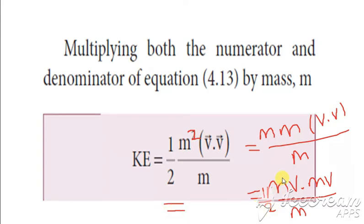And this MV can be written as P, and same way this MV can be written as P. So we get half P square divided by M.